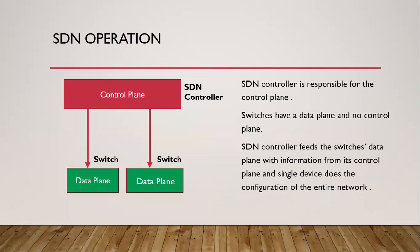In the operation of SDN, the SDN controller is basically responsible for the control plane, and these switches have a data plane and no control plane. This is the main thing to learn in SDN. The SDN controller feeds the switches and data plane with information from its control plane, and a single device does the configuration of the entire network. This is also very cost effective because only one device, which is the controller, is now controlling all the other devices.